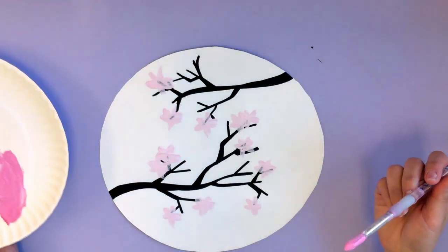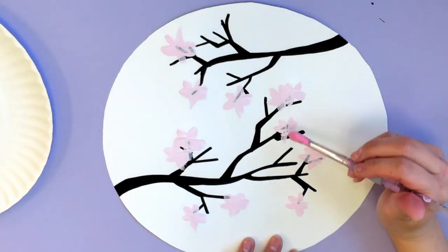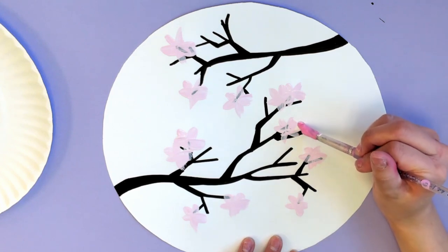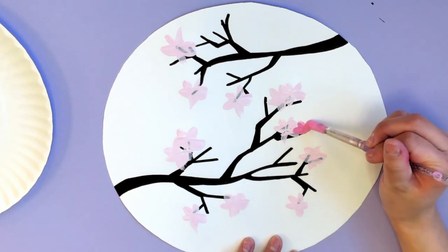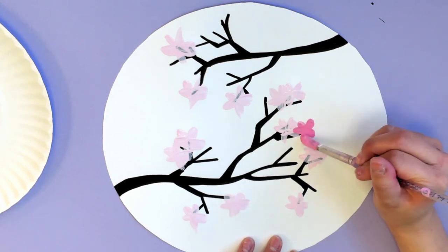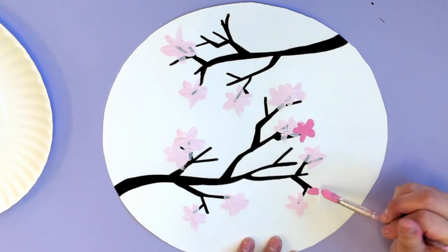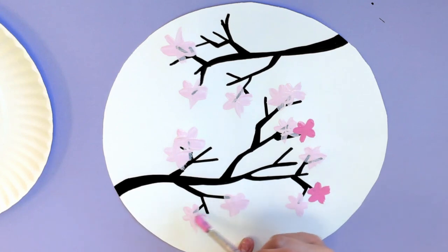I'm going to use this pink to make some more cherry blossoms, and I'm going to overlap this with some of the cherry blossoms I drew already. And this is going to add a nice contrast to our branch. Add it all over.